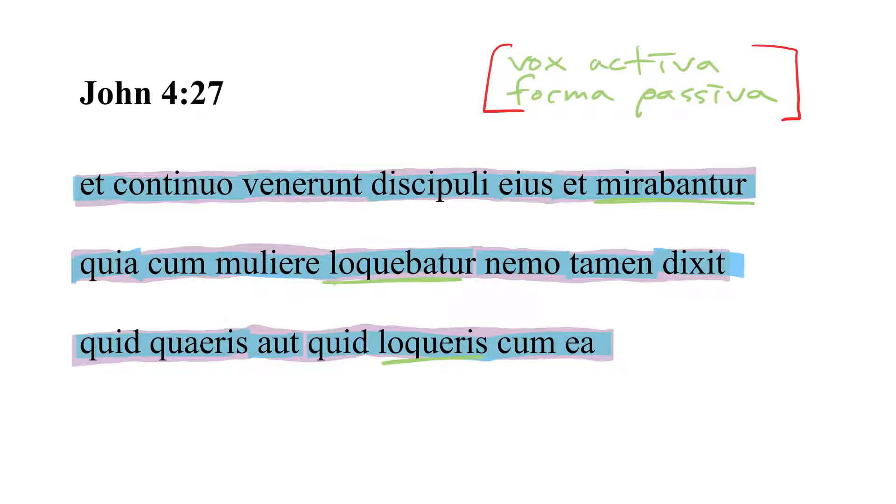Deponent means vox activa forma passiva. At least, that's how I teach it to my students. Active voice but passive form. That is to say, deponent verbs are verbs that have put off their active forms. That's what deponent means from depono, deponere, to put off or kind of put aside. And instead, they appear exclusively, in most cases, in the passive form, but the meaning, the sense, the actual voice, is active.